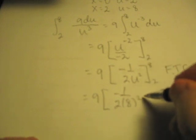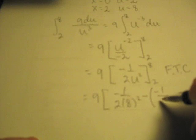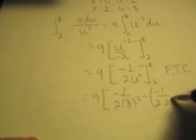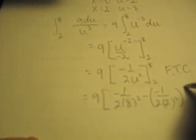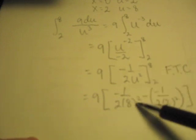So we put the top one in, subtract, and I'll have to use parentheses here, negative 1 over 2 by 2 squared. This is the Fundamental Theorem of Calculus, so the 2 goes in here and the 8 goes in here.